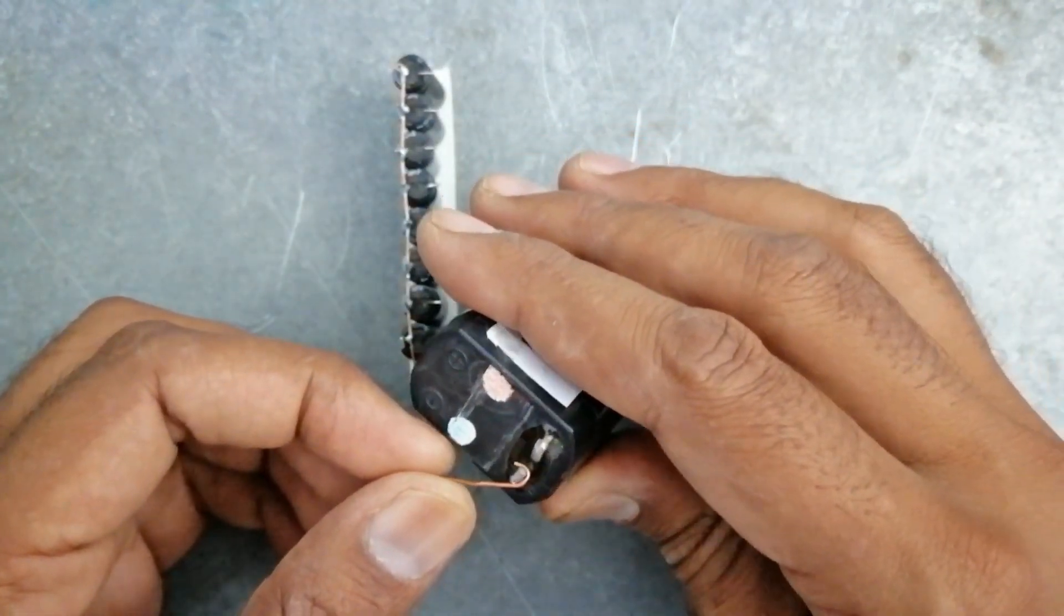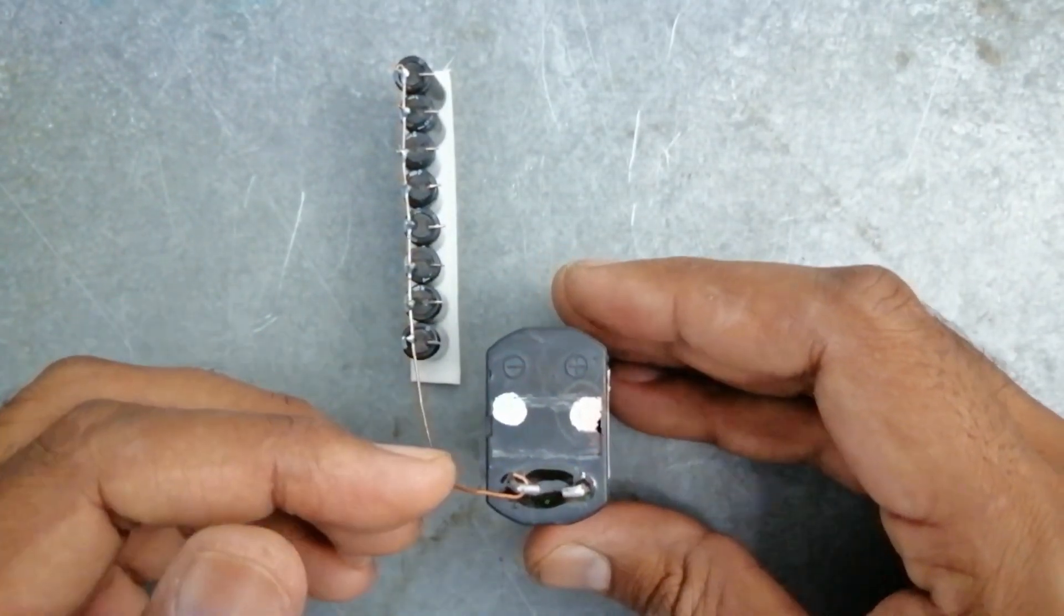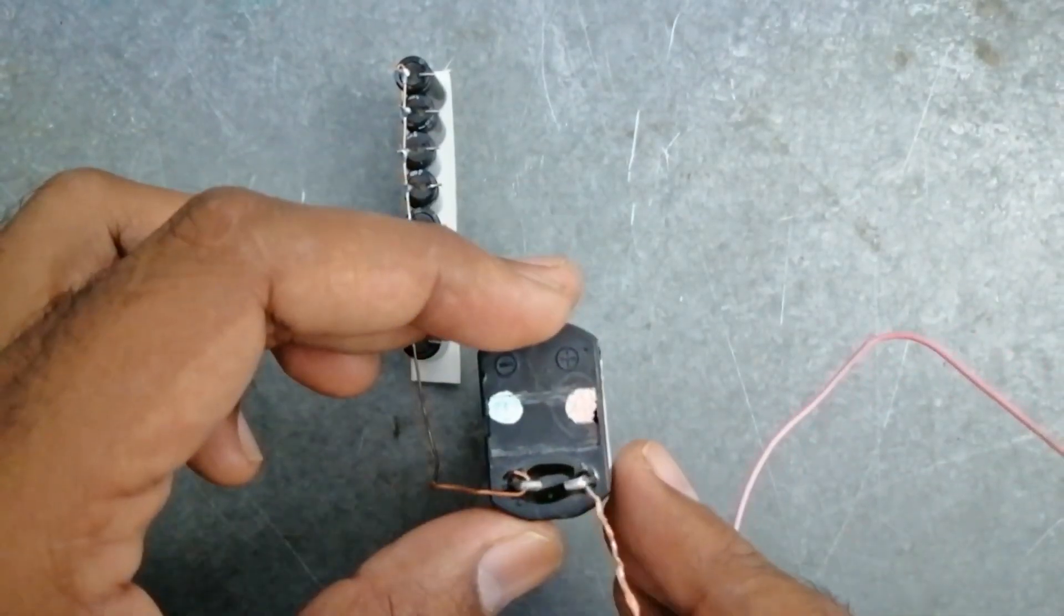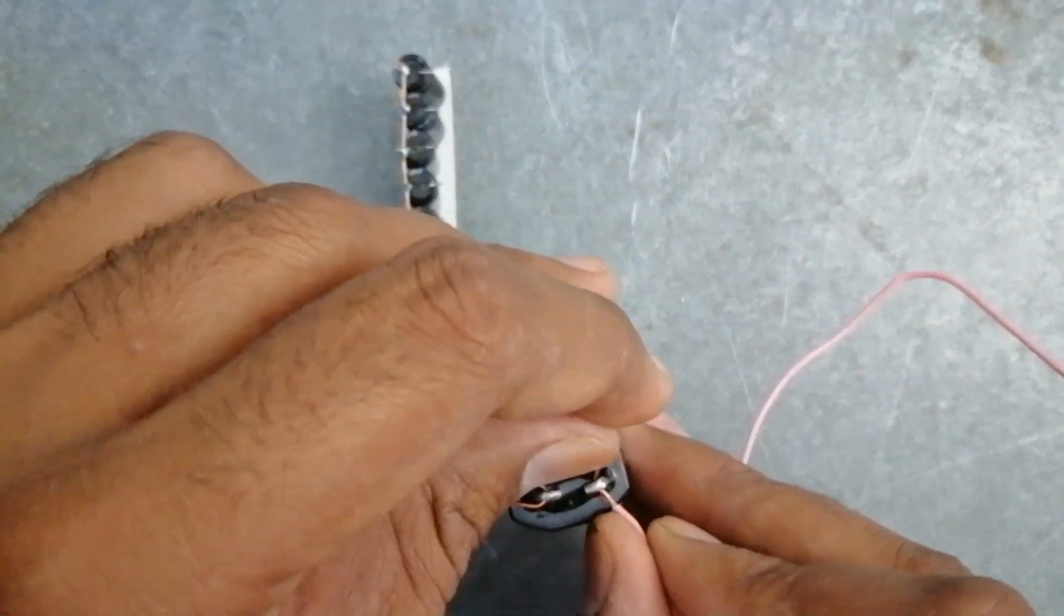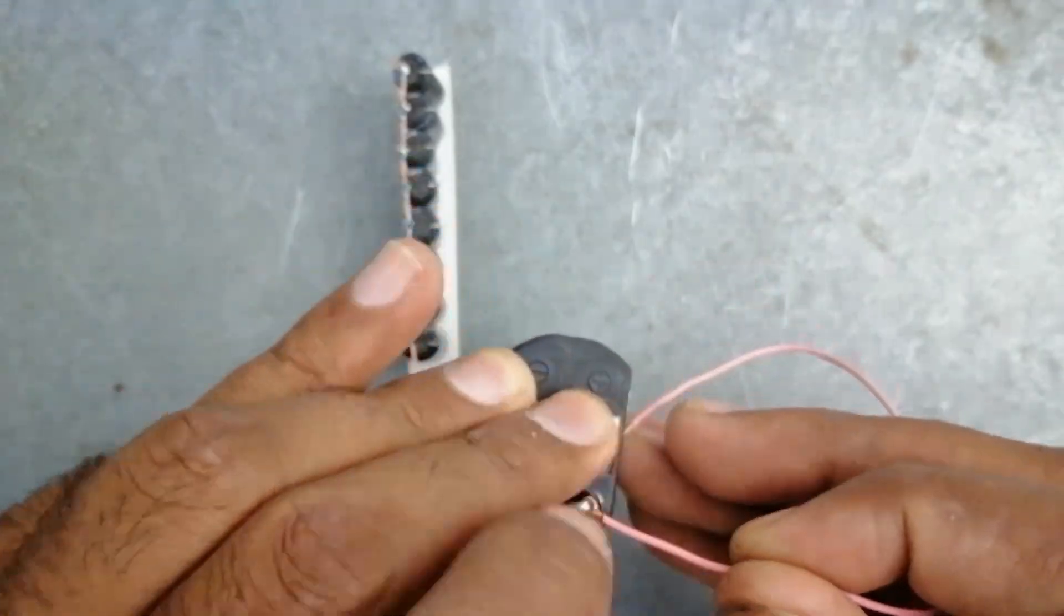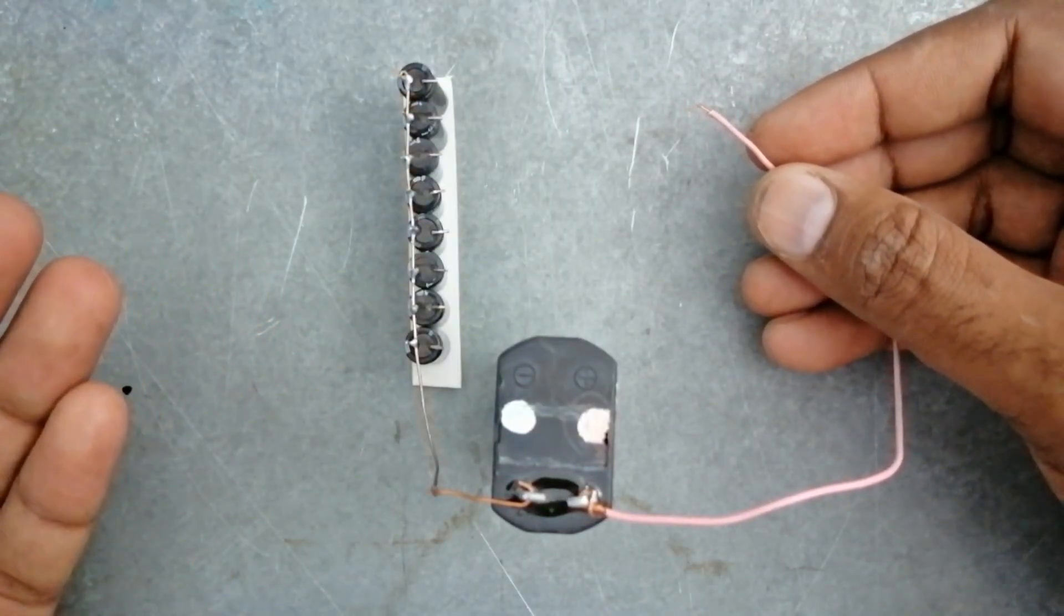These are our eight capacitors; we will attach them with a battery from the negative terminals. We will attach this little wire with the battery's positive terminal so we can store data. Our flash memory is ready.